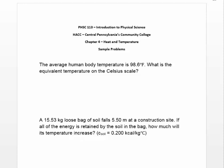The first problem says the average human body temperature is 98.6 degrees Fahrenheit — what is the equivalent temperature on the Celsius scale? We know the temperature in Fahrenheit is 98.6°F and we want to find the temperature in Celsius. The equation from the textbook is: Celsius temperature equals 5/9 times the quantity of the Fahrenheit temperature minus 32 degrees Fahrenheit.